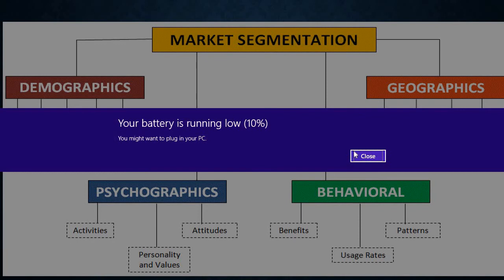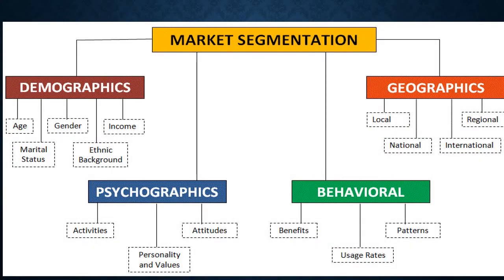Coming to the types of marketing segmentation. Segmentation can be demographic, psychographic, behavioral, or geographic. Demographic means dividing the market on the basis of certain demographic features — such as age (child, adult, adolescent, old age), marital status (married, unmarried), gender (male, female, transgender, or others), ethnic background, and income. These are the demographic features on the basis of which segments can be designed.